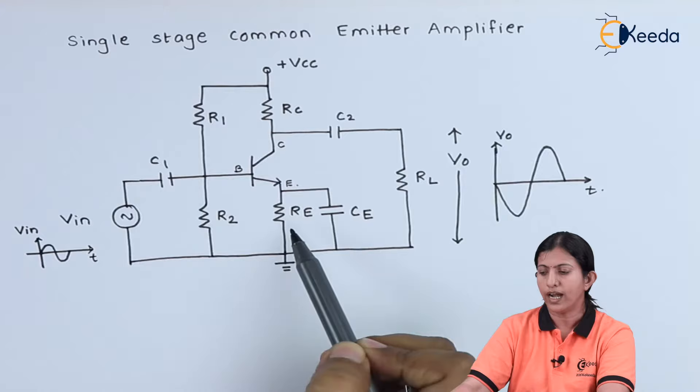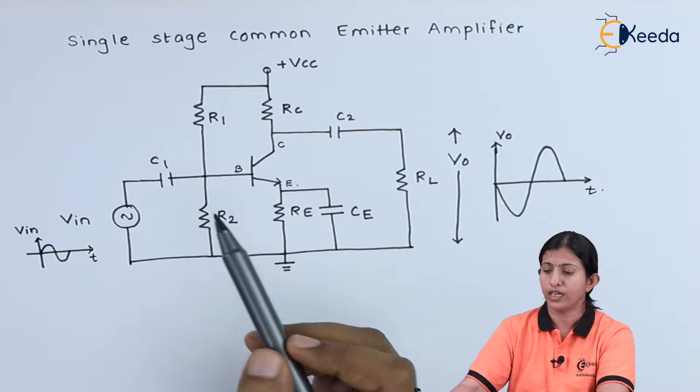R1, R2, and Re form the voltage divider biasing.